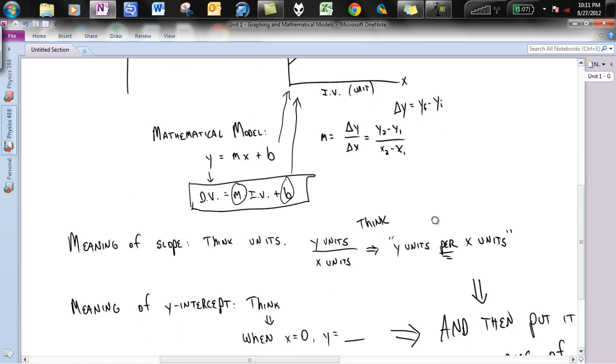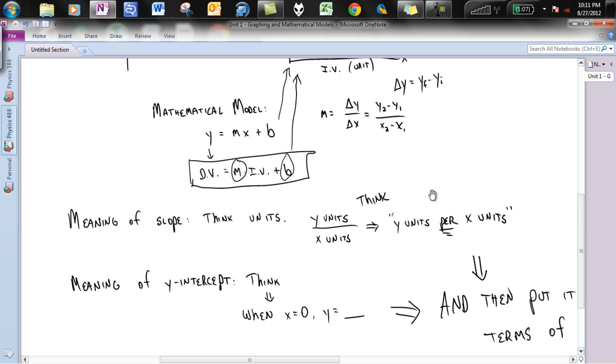And, then, last but not least is the meaning of the slope and meaning of the y-intercept. This gets kind of tricky without actually knowing the experiment. This might be where you want to go into the video and just kind of make sure that you understand this. Meaning of the slope, you are basically looking at the y units per x units.